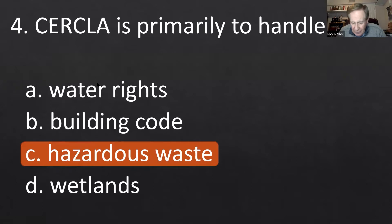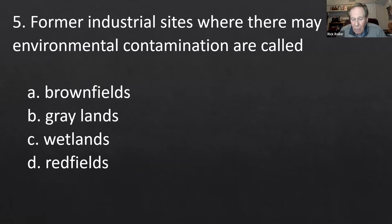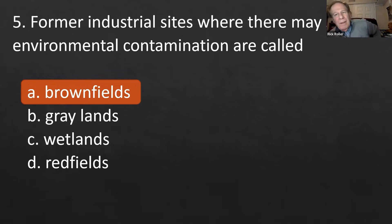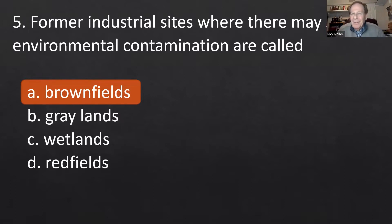Number five: former industrial sites that may still be environmentally contaminated are called what? Options are brown fields, gray lands, wetlands, or red fields. It's going to be brown because it's industrial — brownfields. We have a number of brownfields across Utah. One of the largest is in Midvale on the west end, where there used to be steel factories that caused really significant problems, particularly in old town Midvale.